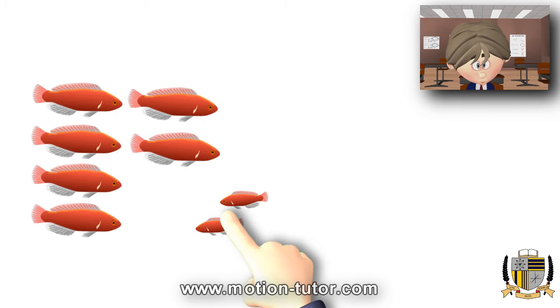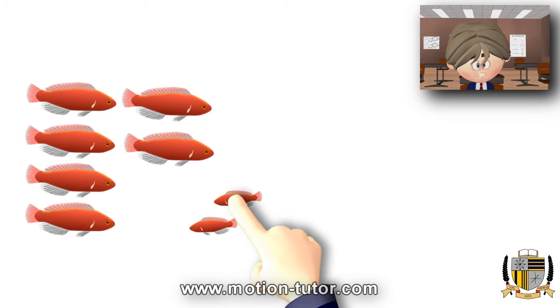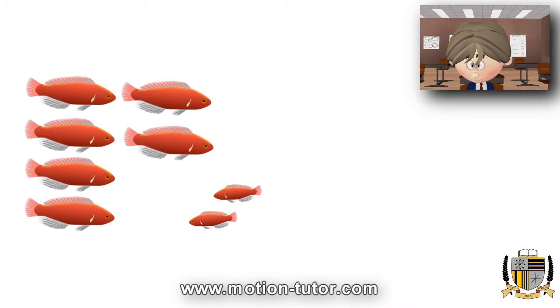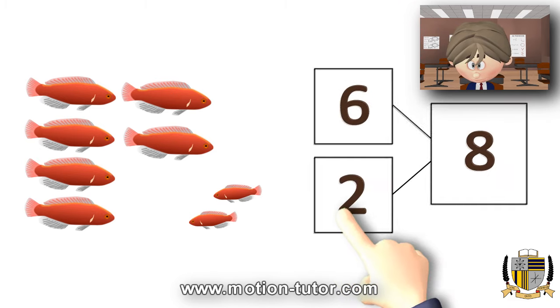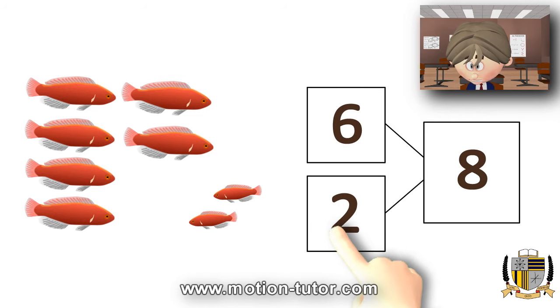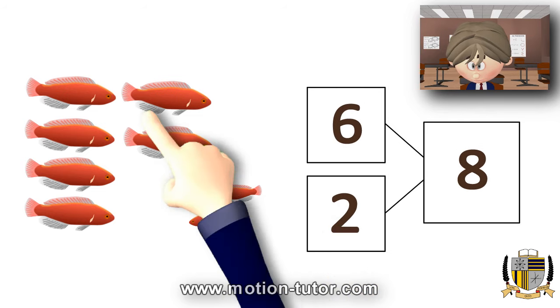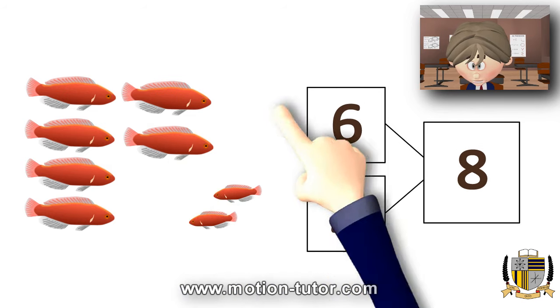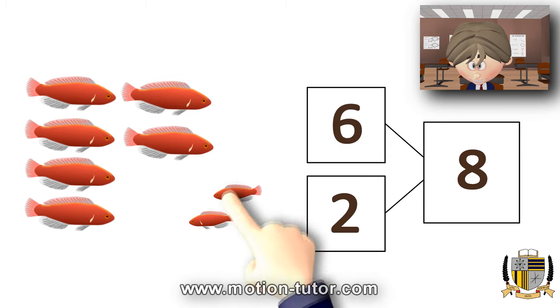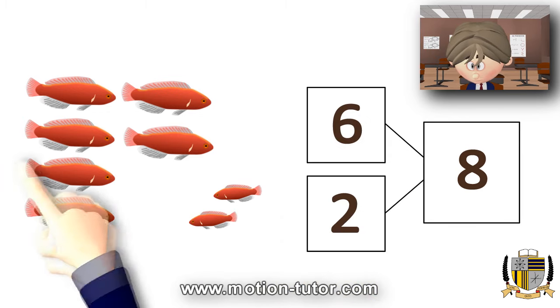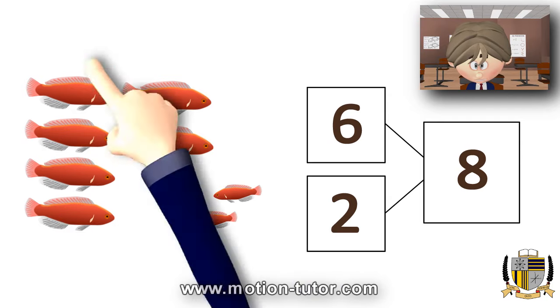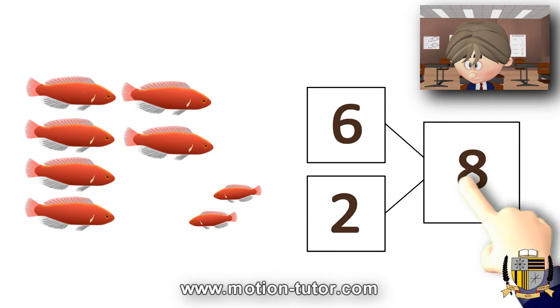So how do you think that number bond is going to look? Let's take a look. Yep, I'm sure some of you guys guessed this. Six larger ones, here's the six. Two smaller, here's the two. And together, one whole thing is eight. And here's the eight.